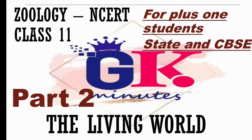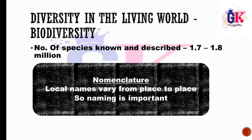What we are going to do is Nomenclature. We are going to make a scientific name — that is, the rules and regulations. There are 1.7 to 1.8 million species, and each organism has a name. Local names create confusion, which is why it is called Nomenclature — providing scientific names for organisms.